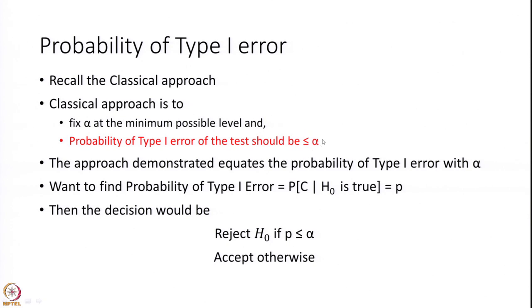Previously we had a critical value and were comparing the test statistic with that critical value. Here we would like to compare the probability with the alpha value — that is, with the fixed value for which we want the type 1 error to be smaller.